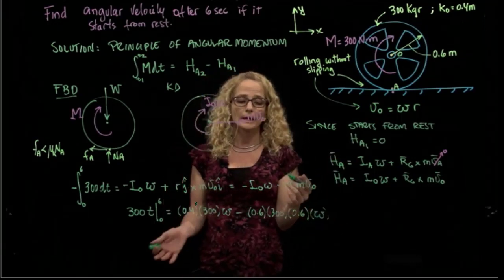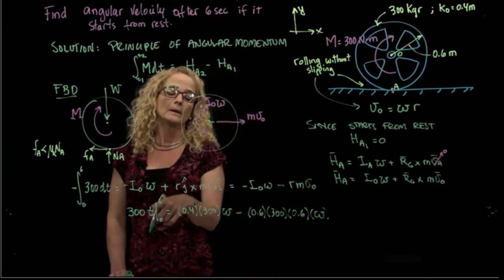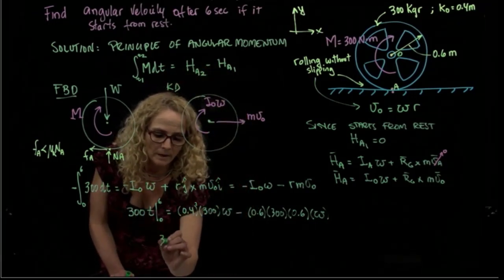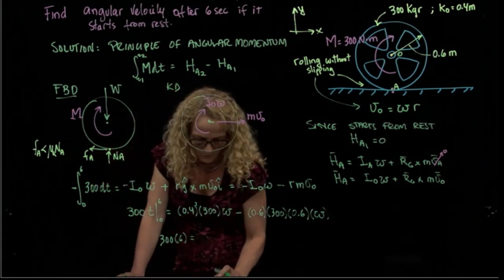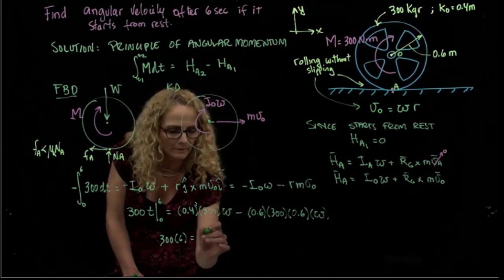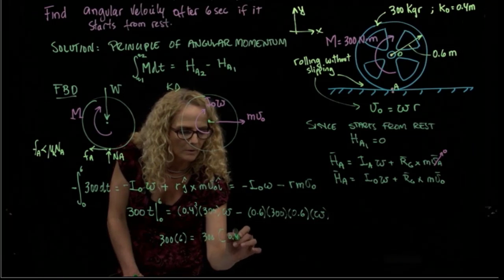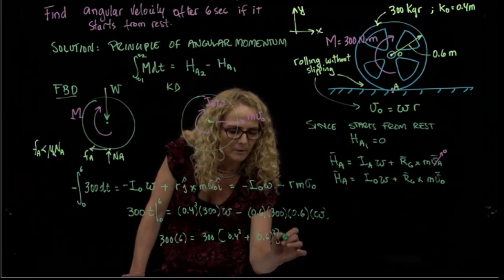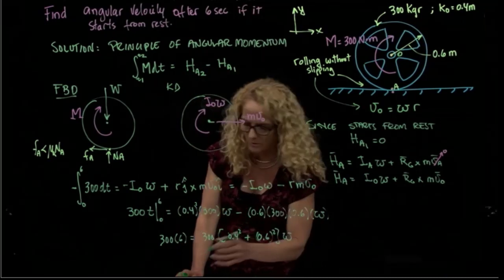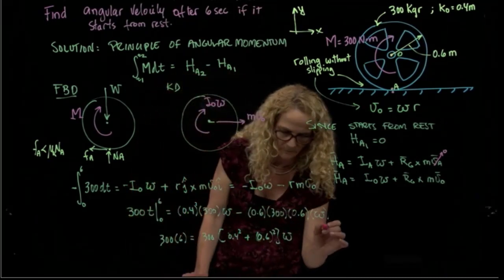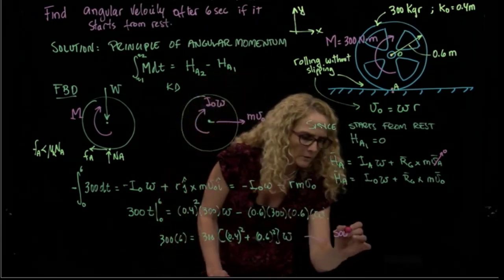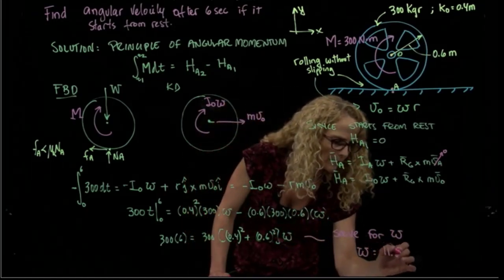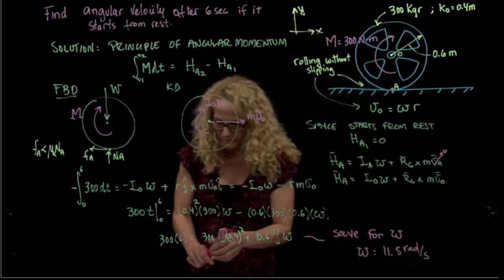As you see here, we are relating the angular velocity with the time. And of course, we can already evaluate for that time. So that will be 300 times 6 equals all those values. That will be 300 times 0.4 squared plus 0.6 squared times angular velocity. I can actually now solve for omega, and omega equals 11.5 radians per second. And that's the result that I was looking for.